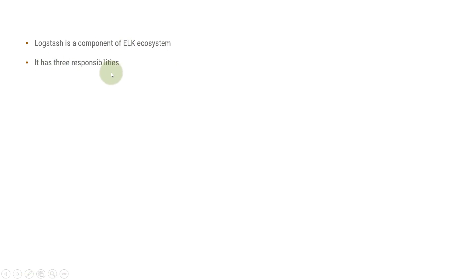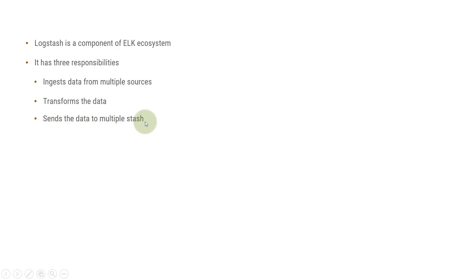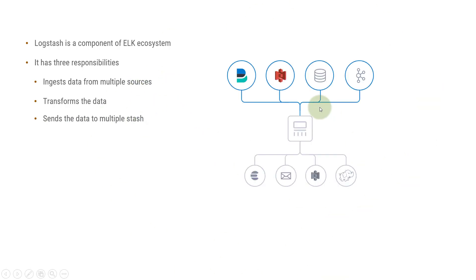Logstash has three responsibilities. First, it ingests data from multiple sources. Then it transforms the data, and then it sends the data to multiple destinations or stashes. So in a diagrammatic view, Logstash is consuming messages or data from different sources and then pushing the data to multiple sinks or stashes.